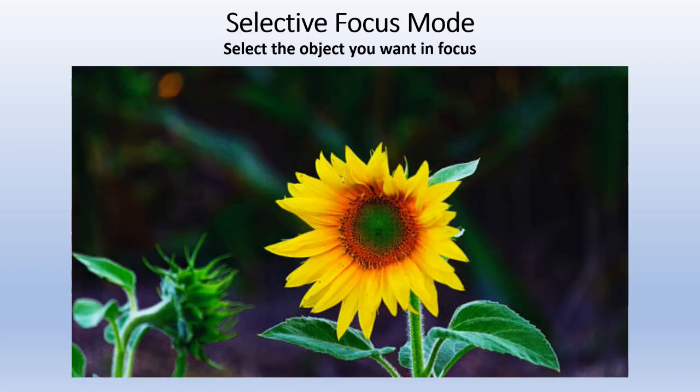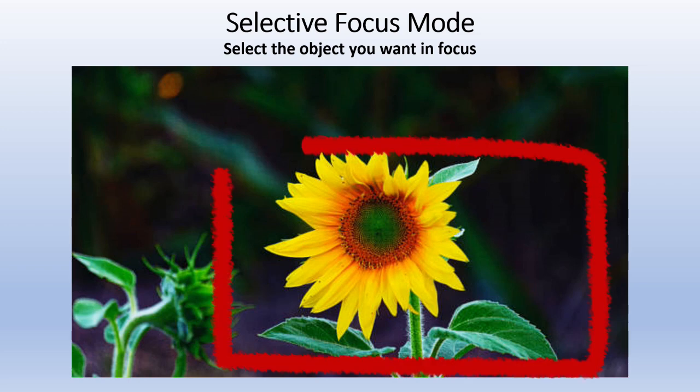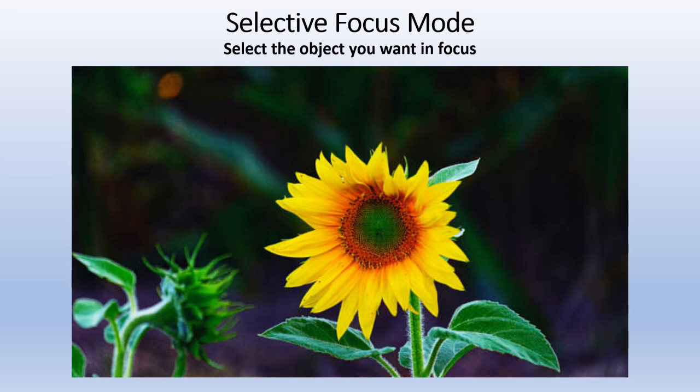Next is Selective Focus Mode: you select the object you want to focus on, and it will draw a box — or you can draw a box — around it. That subject will be sharp and clear, while the rest of the background becomes duller and less clear, as shown in the picture.